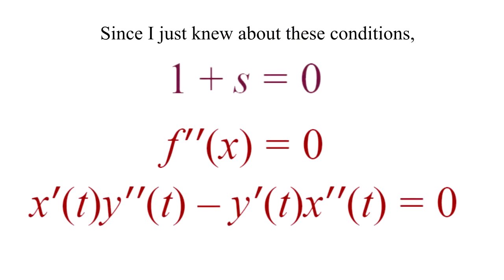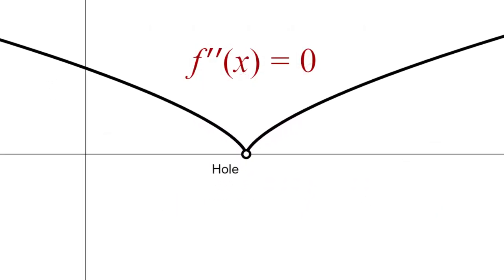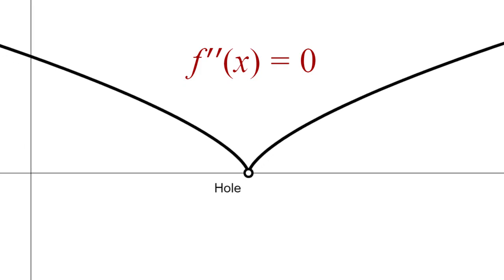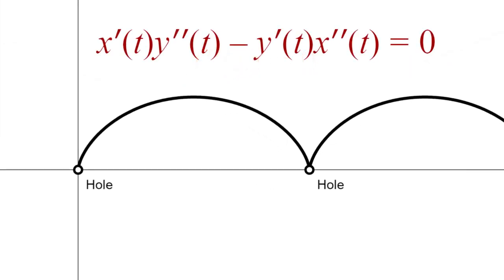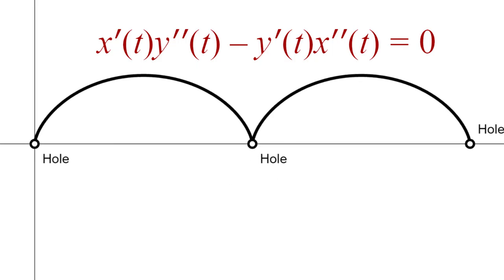Since I just knew about these conditions, it is clear to me now that the pseudo-focus at the function of x to the power of 2 thirds does not exist, and so are those pseudo-foci on the values of the cycloid by proof of step 2.1.